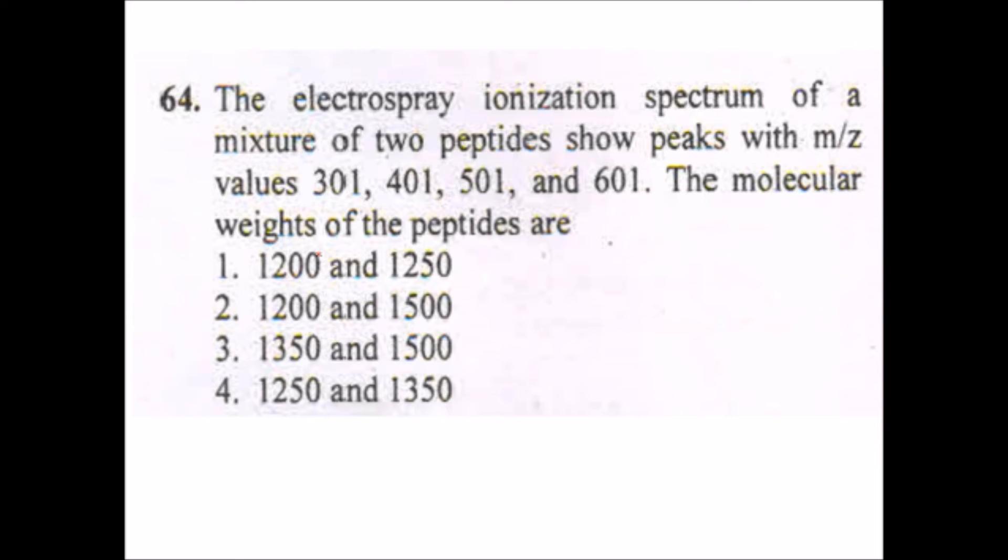Yes, this question: the electrospray ionization spectrum of a mixture of two peptides shows peaks with m/z values 301, 401, 501, and 601. The molecular weights of the peptides are... actually while we are talking about molecular weight, here we have the mass by charge ratio which is 301. Now when we are talking about mass spectroscopy, then its nearby peak may have the charge of z plus one.